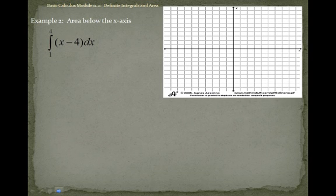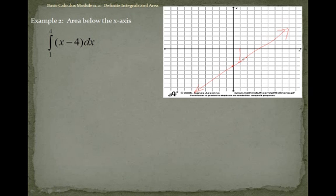Now let's look at this function. Here we have a y-intercept of negative 4 and a rise and run of 1. We're going to find the area between 1 and 4, which is about where the line meets the x-axis. Notice that plugging 4 into the function gives us 4 minus 4, which equals 0, confirming it meets the x-axis at 4.